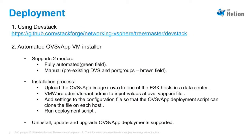For OVSVF, we have two deployment solutions available. One is DevStack, which is available at a provided URL. The second is an automated installer that runs in two modes: fully automated mode and manual mode. In fully automated mode, you don't have to do anything — everything is handled by the installer. In manual mode, you need to provide pre-existing DVS and port groups available in the vCenter. As part of the installation process, we upload an OVA image on the ESX host, provide all details in an INI file called the OVSVF INI file, run the script, and it deploys the OVS VM on every ESX host.